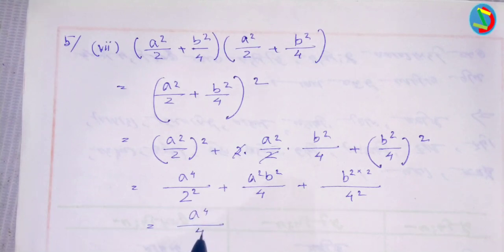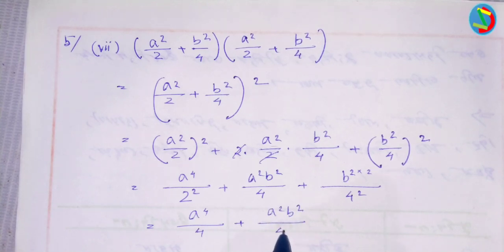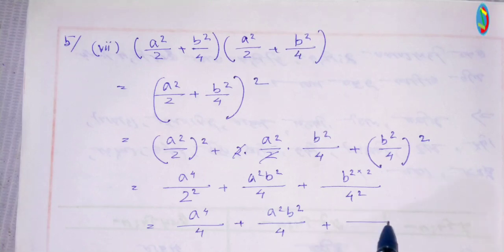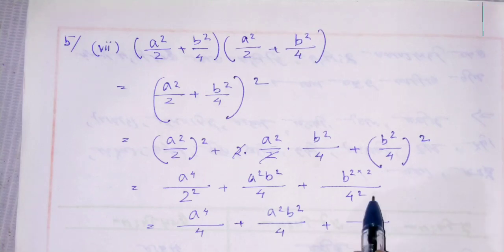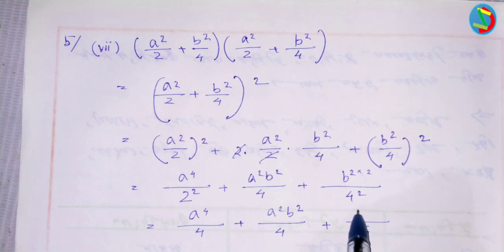So a to the power 4 divided by 4, plus a squared b squared divided by 4, plus a squared b squared divided by 4, plus b to the power 4 divided by 16, then b to the power 4 divided by 16.